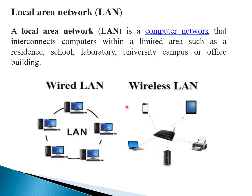The next type is a Local Area Network (LAN). A LAN is a computer network that interconnects computers within a limited geographical area, such as a home, school, lab, university campus, or a building. A LAN has two types: wired LAN, where all nodes are connected through cables, and wireless LAN (WLAN), where nodes are connected through access points.